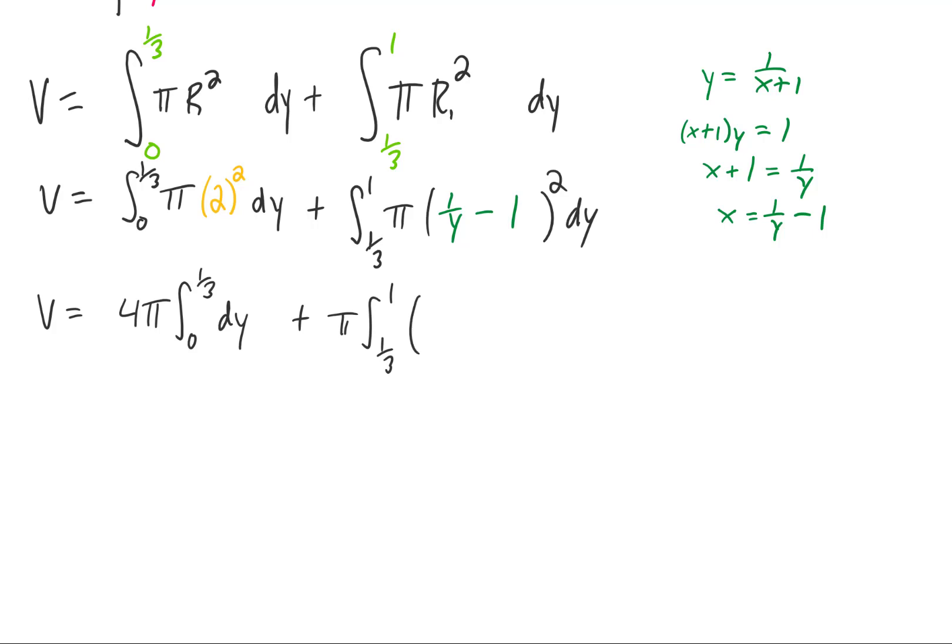The second integral needs to be foiled. The result of that foiling is here. I'm just going to leave the first integral as it is and rewrite the second integral in a way that's a little bit easier to integrate.